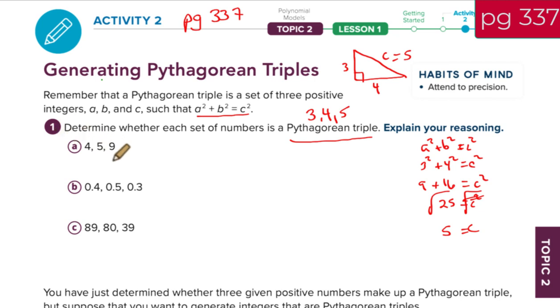Now, let's look at 1a. Determine whether the set of numbers is a Pythagorean triple. So we just need to check, does a squared plus b squared equal c squared? Remember, you always got to put the largest number by itself. That's where c goes. So that's going to be the 9. So we're going to check, does 4 squared plus 5 squared equal 9 squared? We get 16 plus 25. Does that equal 81? 41 does not equal 81. So the answer to a would be no. And it says, explain your reasoning. a squared plus b squared does not equal c squared. In this case, that's my reasoning.